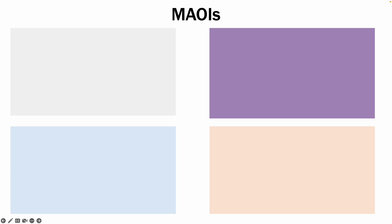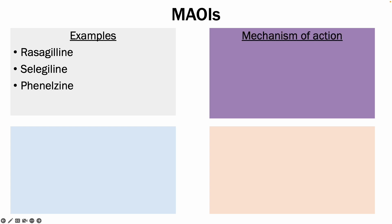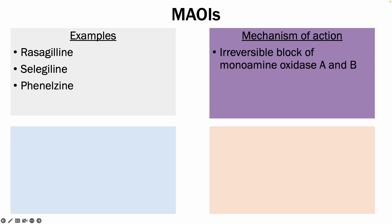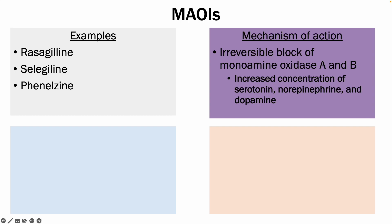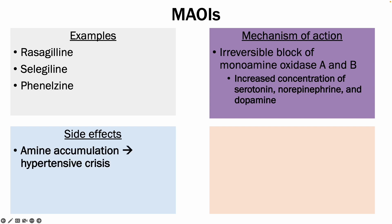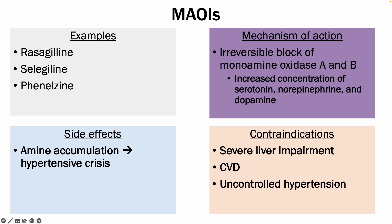The next class of antidepressants are the monoamine oxidase inhibitors (MAOIs). Examples include rasagiline, selegiline, and phenelzine. The mechanism of action is the irreversible block of monoamine oxidase A and B enzymes, which prevents the breakdown of norepinephrine, serotonin, and dopamine, overall increasing the concentration of all three in the brain. An important side effect is amine accumulation caused by the irreversible MAO-A and MAO-B blockade, which can lead to a hypertensive crisis. Contraindications include severe liver impairment, cardiovascular disease, and uncontrolled hypertension.